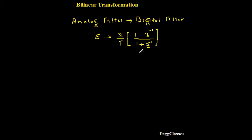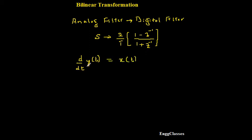The next question is: how did we arrive at the conclusion that S needs to be substituted with 2/T × (1 − z⁻¹) / (1 + z⁻¹)? There is a small derivation we will consider in this video. To derive this transformation, I will consider: d/dt of y(t) is equal to x(t). I consider the input and output — the derivative of the output taken as the input.